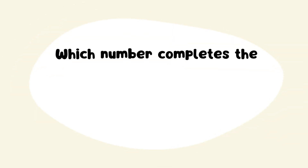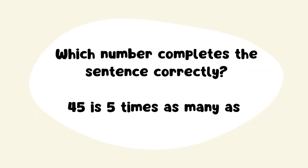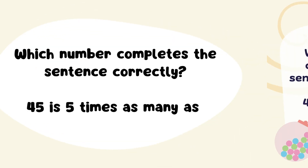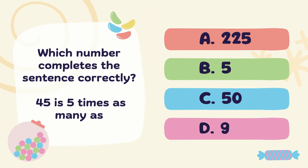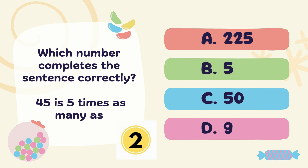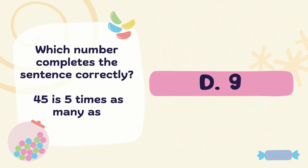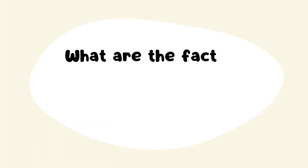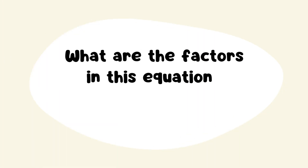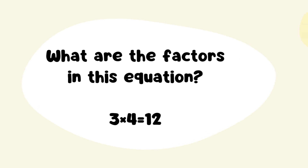Next Question: Which number completes the sentence correctly? 45 is 5 times as many as? Answer: Option D. 9.